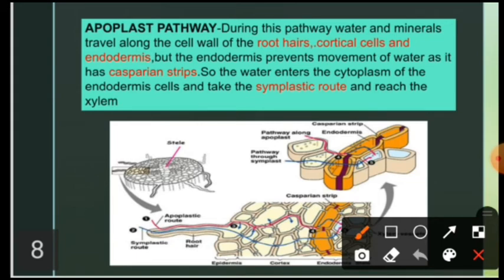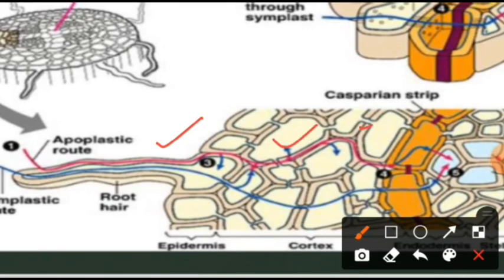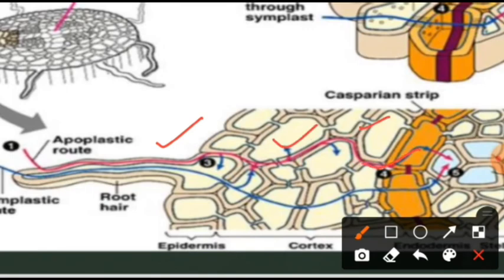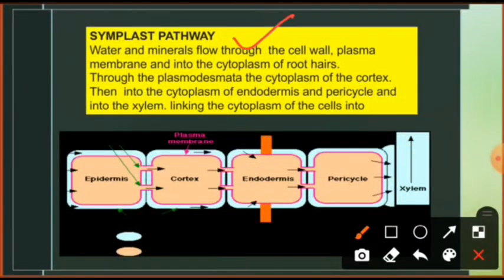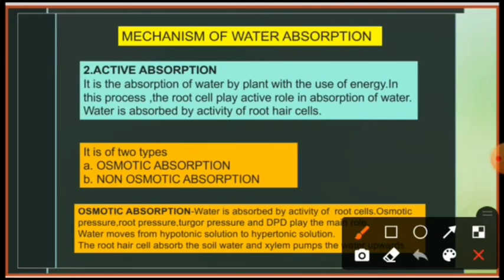So water enters the cytoplasm of the endodermis cells — where the apoplast pathway cannot enter, water enters the endodermis and follows the symplast pathway, and ultimately reaches the xylem. You can see in this diagram: the red pathway is the apoplast, and from the endodermis water follows the symplast pathway to the xylem. In the symplast pathway, water moves through plasmodesmata — from the epidermis through the cortex, endodermis cytoplasm, and pericycle into the xylem conducting tissue. This was all about passive absorption.